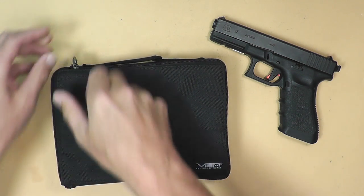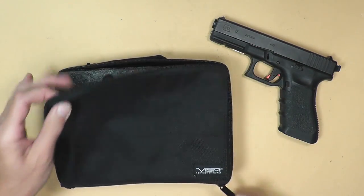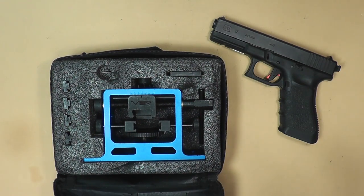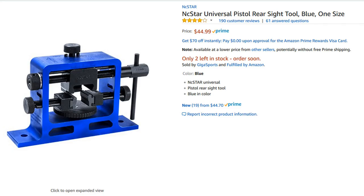This is the case right here that it comes with, nice little padded case to store everything in it. It's a real simple press. It runs about $40 to $50 on Amazon. I'll put a link in the video description below.